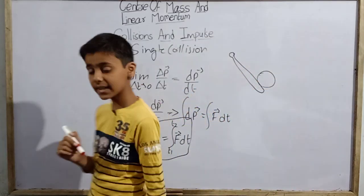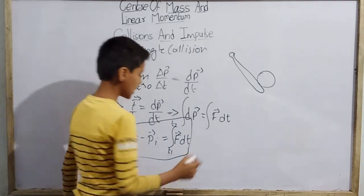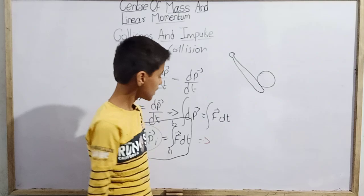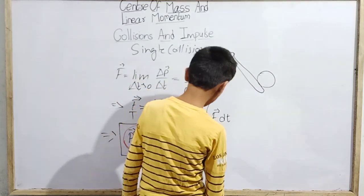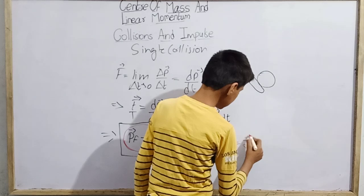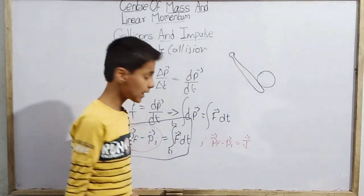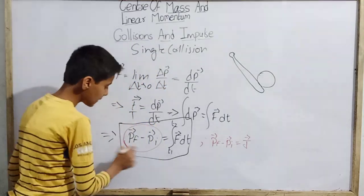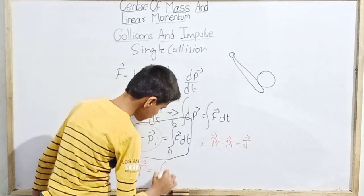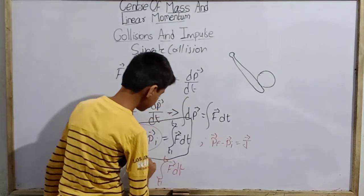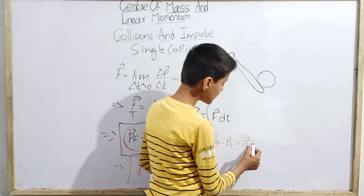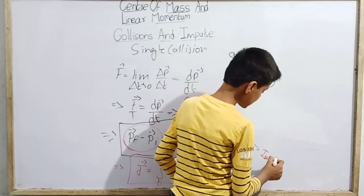To make the equation shorter, our scientists thought that the change of momentum needed a name. So we say the change of momentum — vector p_f minus vector p_i — we call it vector J. Replacing it, vector J equals the integral from t1 to t2 of vector F dt, which means impulse. This quantity vector J is said to be the impulse.